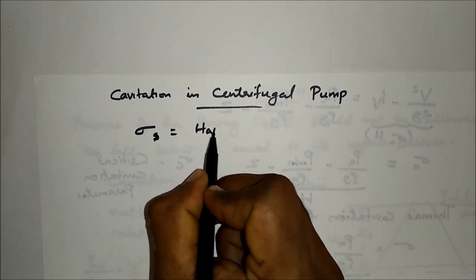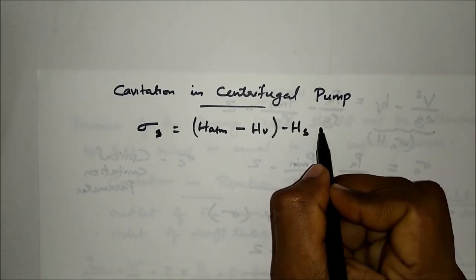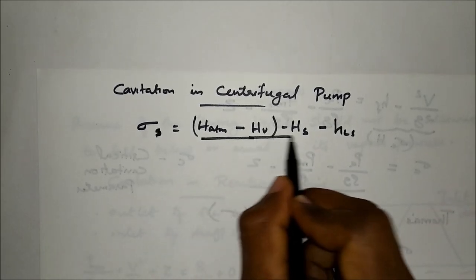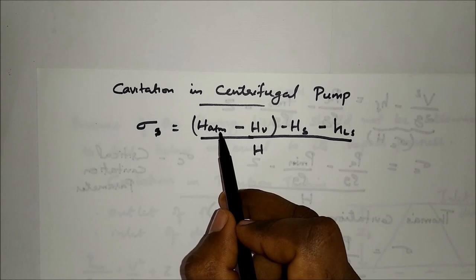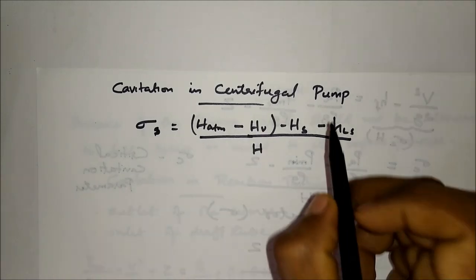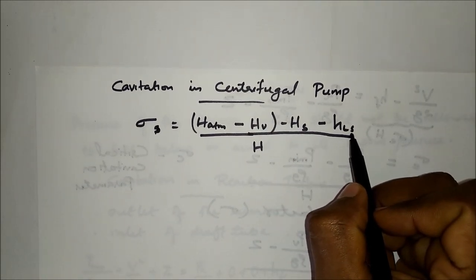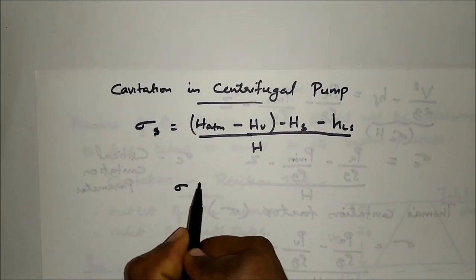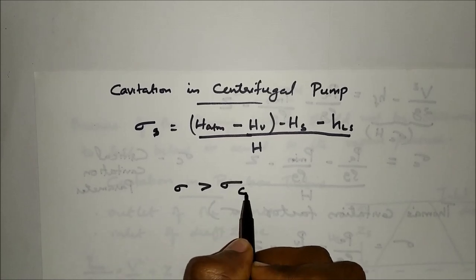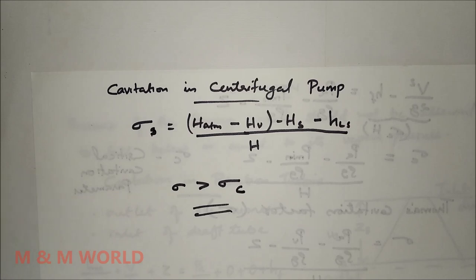The Thomas cavitation factor for centrifugal pump: σ = (H_atm − H_v − H_s − H_ls) / H, where H_atm is the atmospheric pressure head, H_v is the vapor pressure head, H_s is the suction pressure head, H_ls is the head loss due to friction in the suction pipe, and H is the head developed by the pump. In order to avoid cavitation, σ must be greater than σ_c, that is, the Thomas cavitation factor must be greater than the critical cavitation parameter.